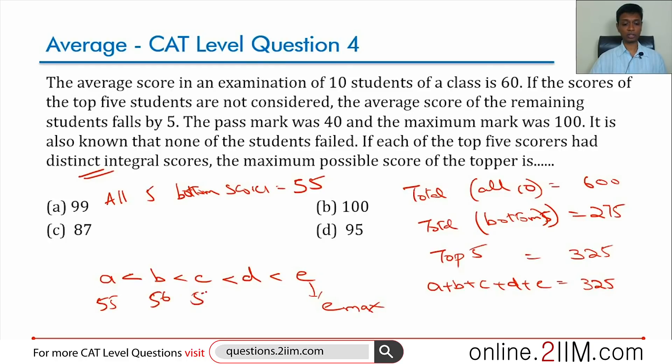So a could be 55, the least value b can take could be 56, 57, 58, and then e. All 5 add up to 325. If assumed values are 55, 56, 57, 58, add these - 55 plus 56 plus 57 plus 58, that's 226. The total is 325. From that we subtract 226, we get 99.